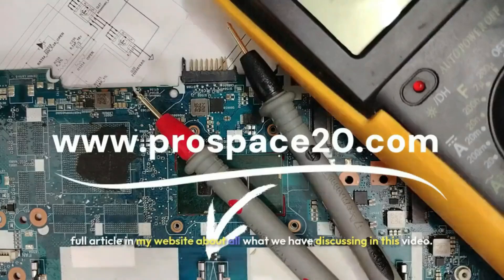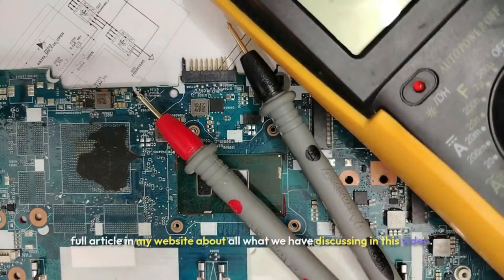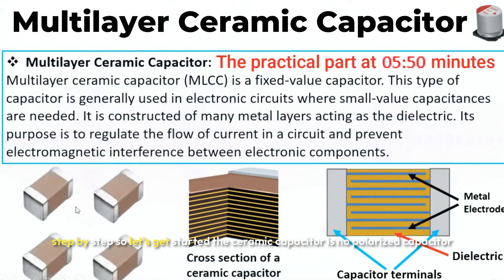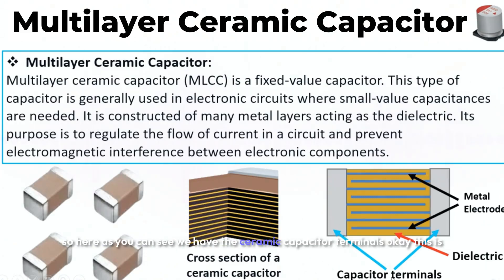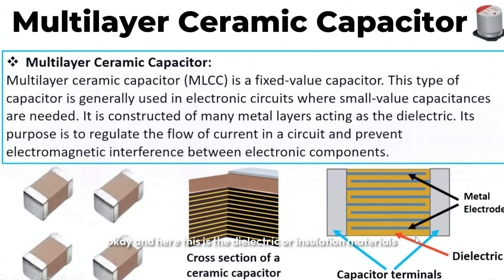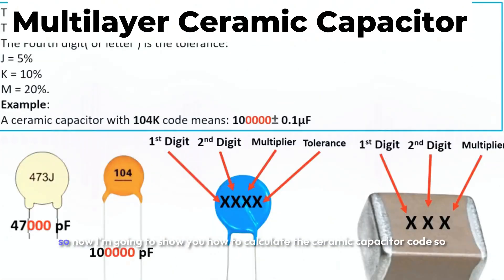The ceramic capacitor is a non-polarized capacitor. Here we have a cross section of a ceramic capacitor - as you can see, it is composed of multiple layers with insulation material between them. Here are the ceramic capacitor terminals, the metal electrodes, and the dielectric or insulation material.